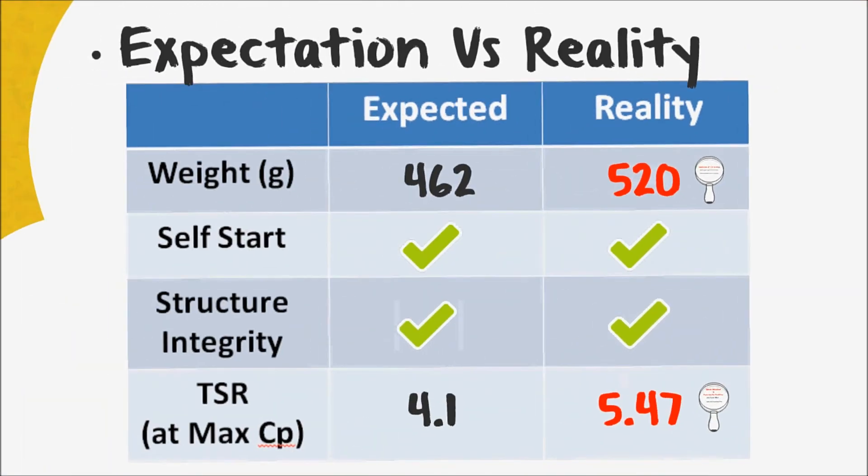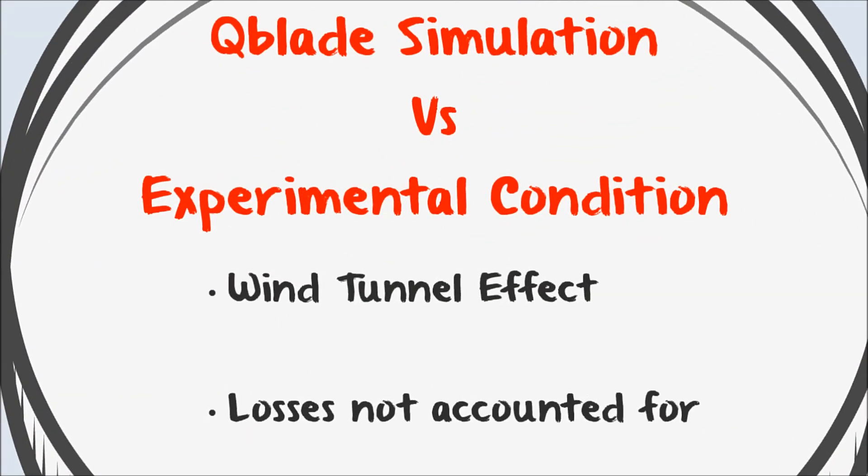Second, deviation in terms of the TSR at maximum CP. This is mainly due to the deviation between the Q-blade simulation and actual experimental conditions. Wind tunnel effects, which affect the flow properties and hence the CP, was not taken into account. Furthermore, Q-blade simulation was unable to account for losses, such as tip loss and flow separation. As a result, we designed the wind turbine meant for a lower TSR.